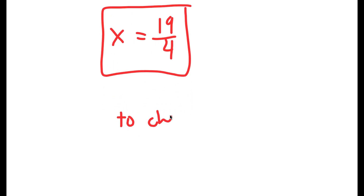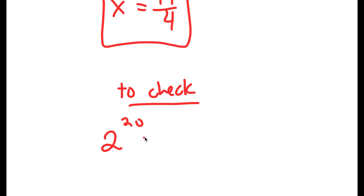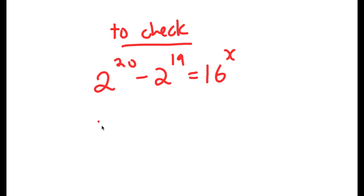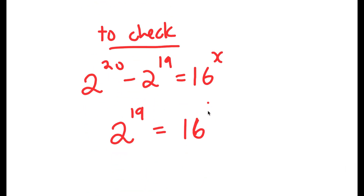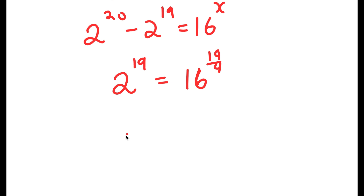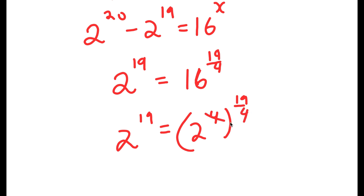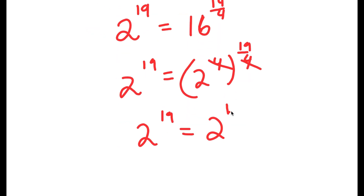To check, my original equation was 2 to the power of 20 minus 2 to the power of 19 is equal to 16 to the power of x. Now, 2 to the power of 20 minus 2 to the power of 19, we already know that's 2 to the power of 19. So we get 2 to the power of 19 is equal to 16 to the power of 19 over 4. Now, 16 is the same thing as 2 to the power of 4, so I have 2 to the power of 4 to the power of 19 over 4. These two 4s cancel out, so I get 2 to the power of 19 is equal to 2 to the power of 19.